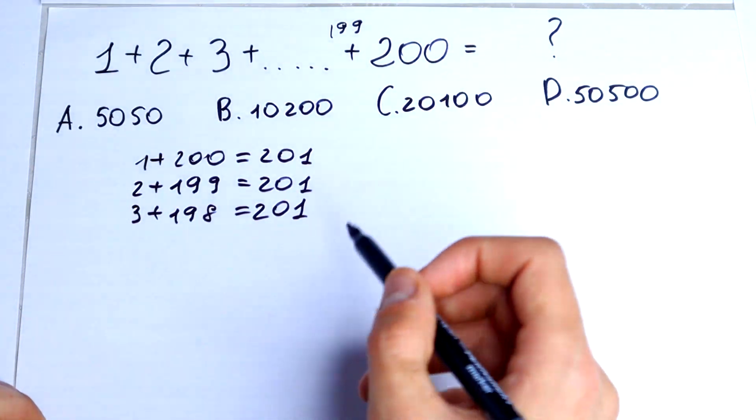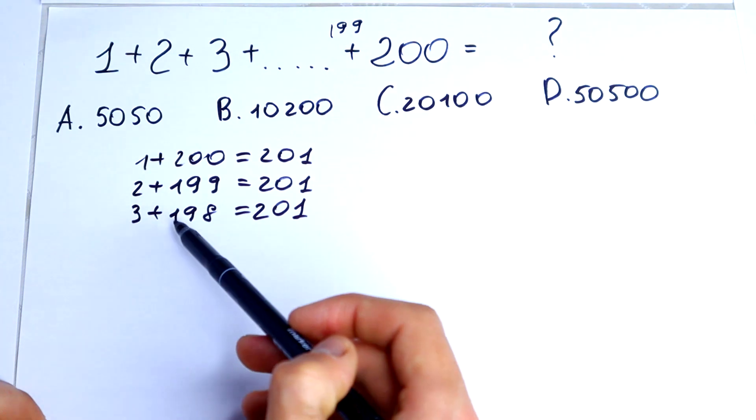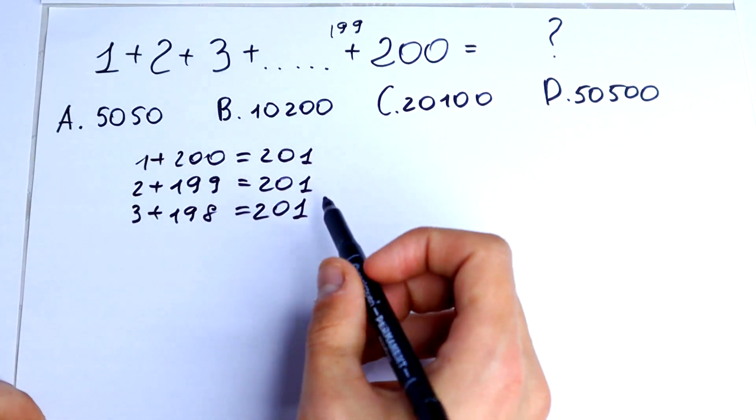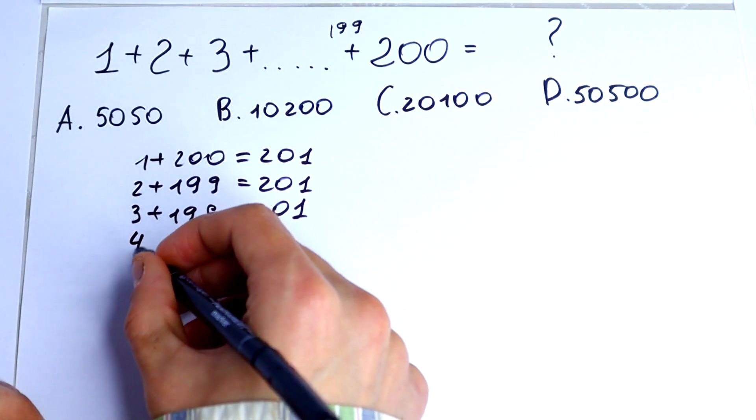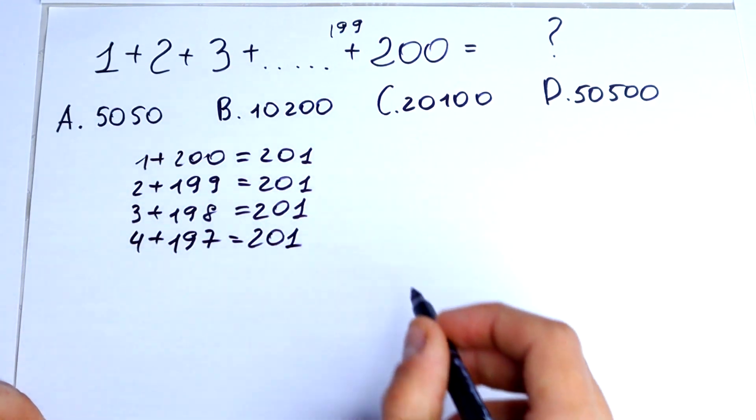And one more pair. 4 and before 198, it would be 197. 4 plus 197, it would be equal to 201.